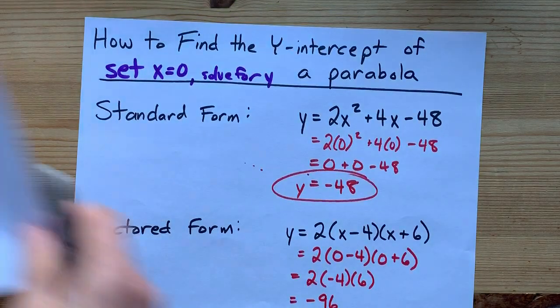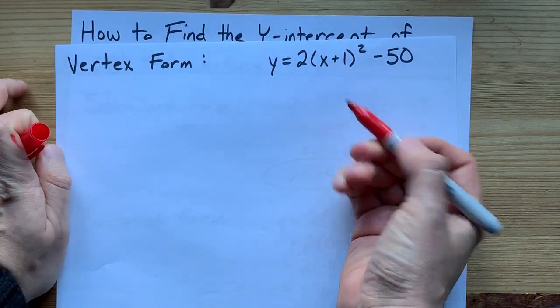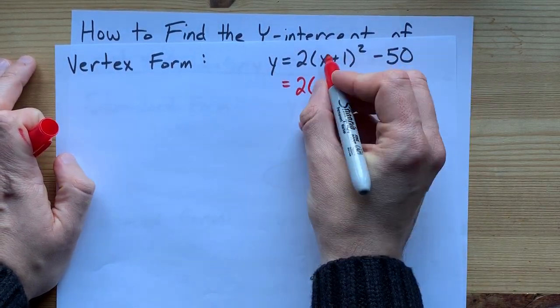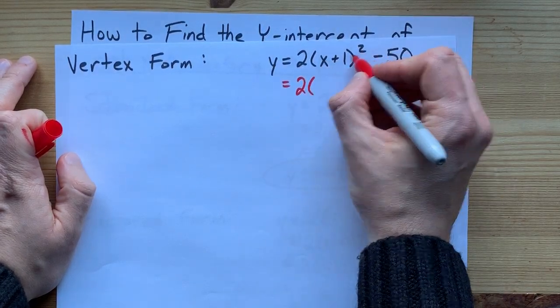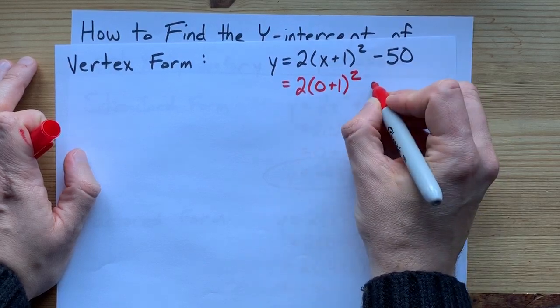And then if we want to do it in vertex form, you can replace that x with 0. 2 times. Now, in vertex form, you're going to have x in brackets with something else probably, in squared. 0 plus 1, all squared.